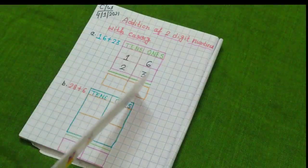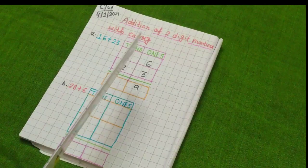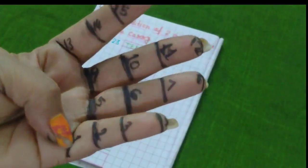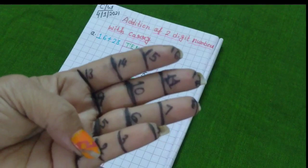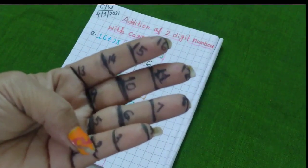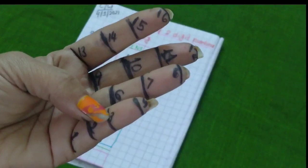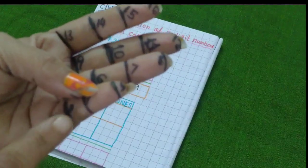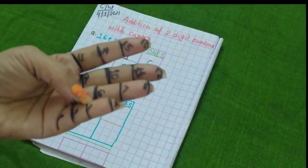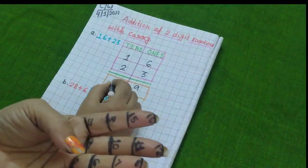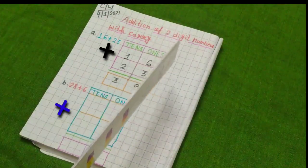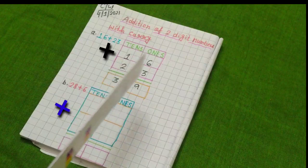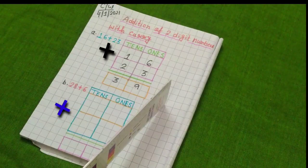So, I am writing here 9. Then, here I have to add 2 and 1. So, first I have to count 2 finger marks. 1 and 2. Then, I have to count more 1 finger marks. 1. So, how many finger marks have I reached? Let's count it. 1, 2 and 3. So, I am writing here 3. So, now, you can see 16 plus 23 is equal to 39. Understood everybody?